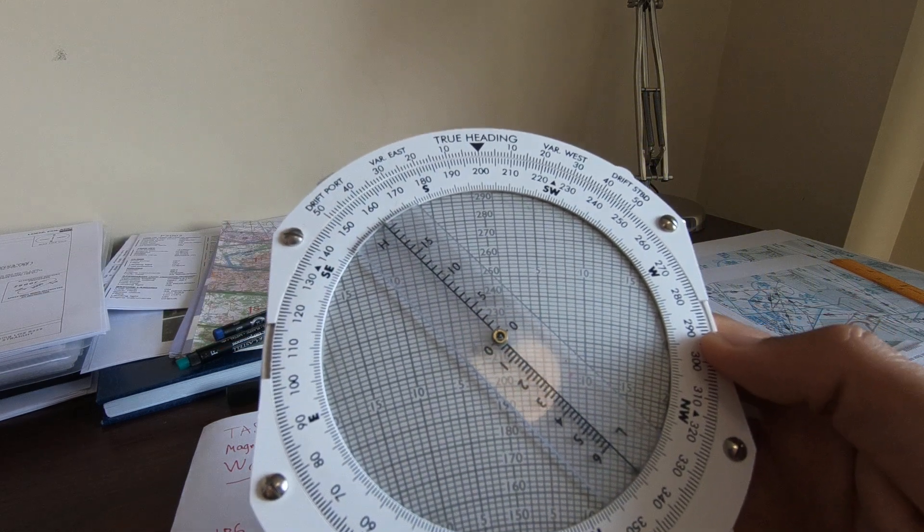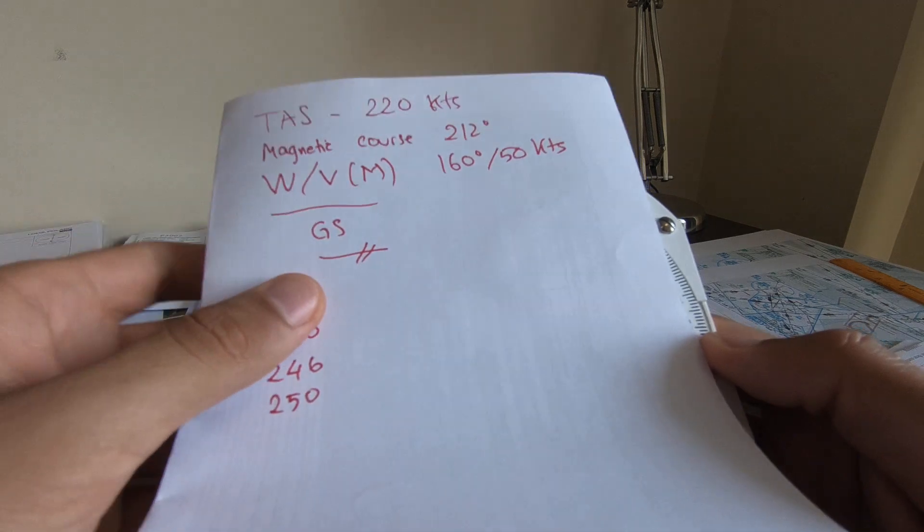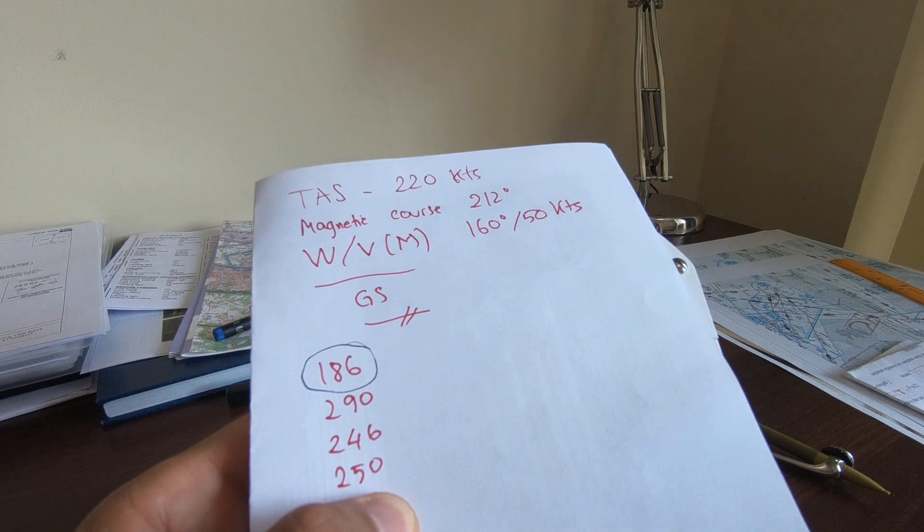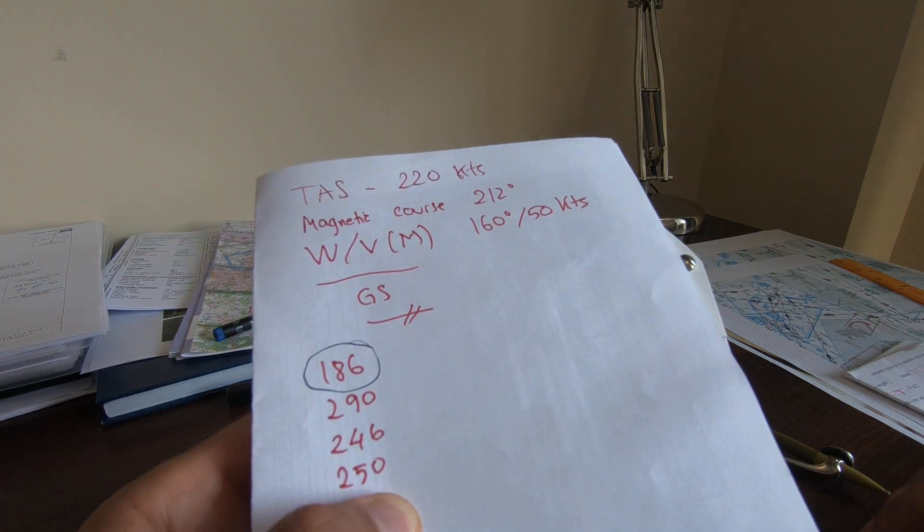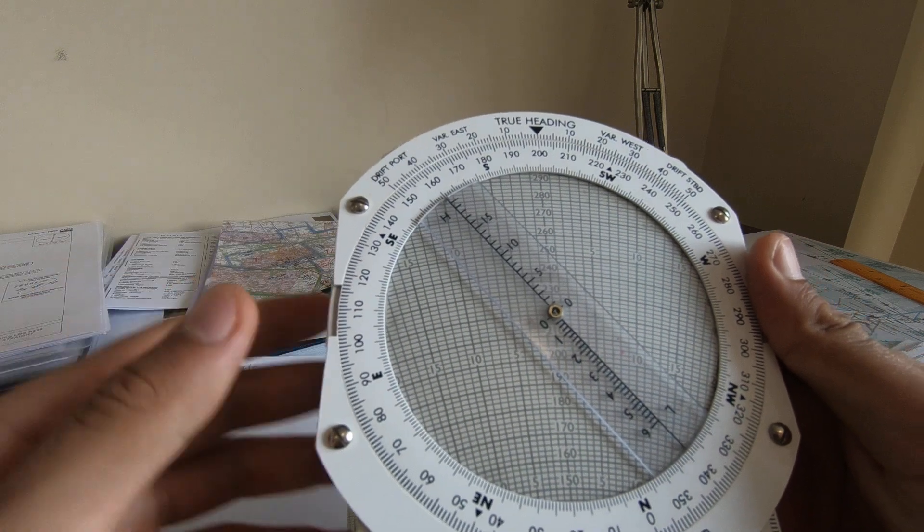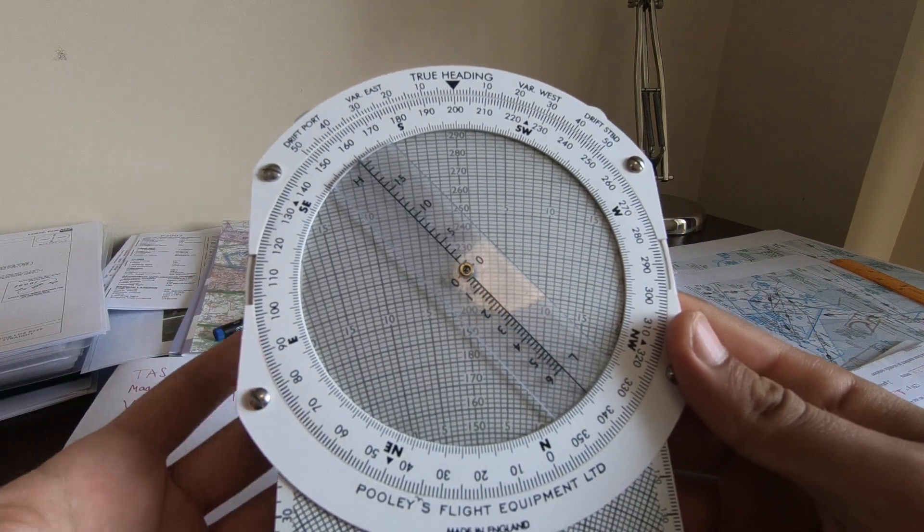So this is the most common mistake that people do. Final answer: 186. This is the most common mistake that people do—they don't correct for the drift.